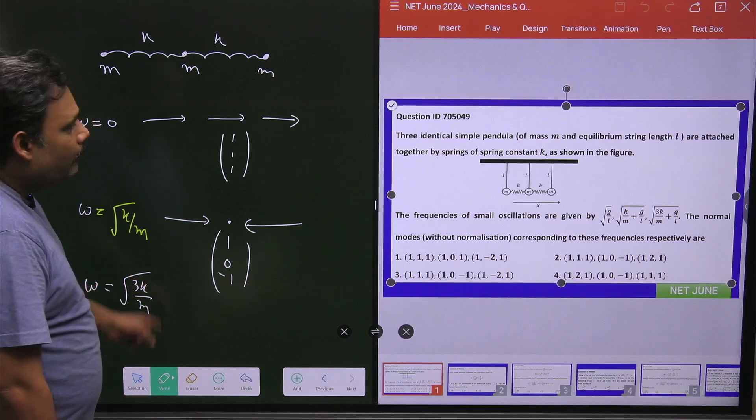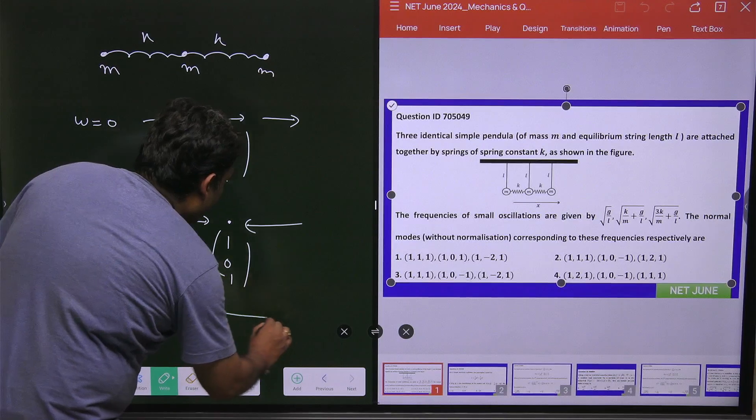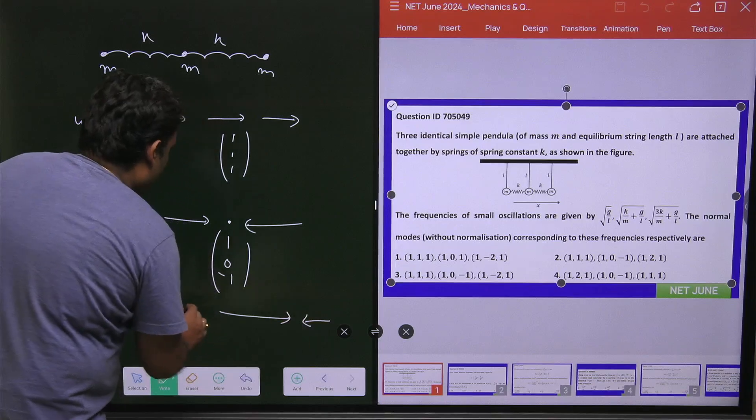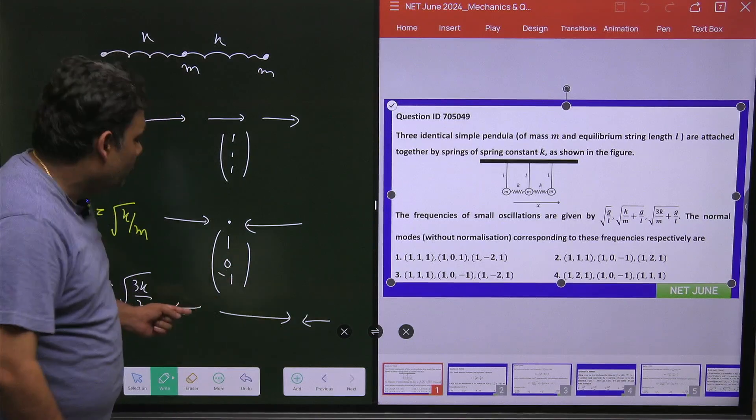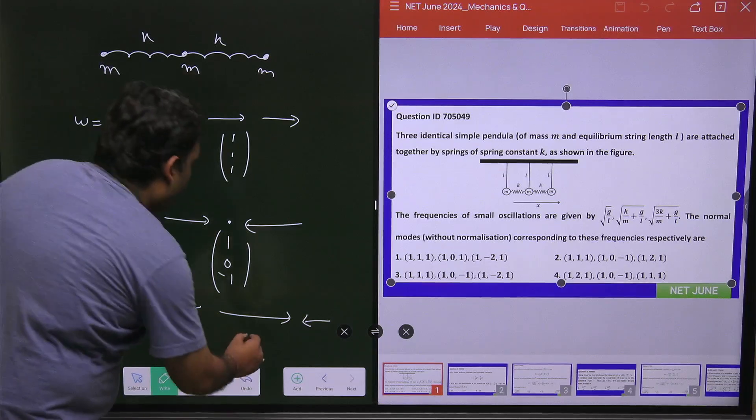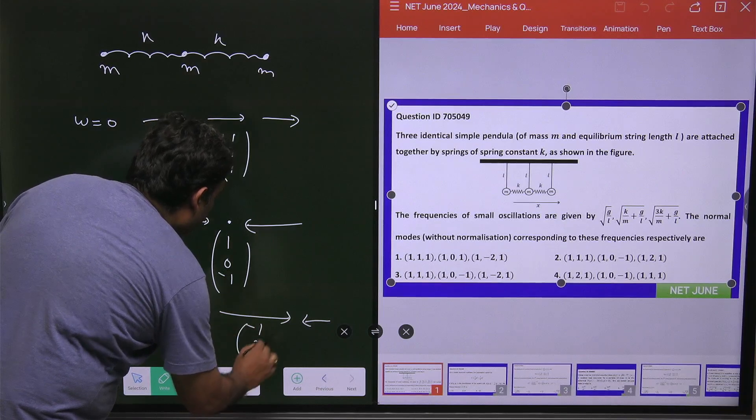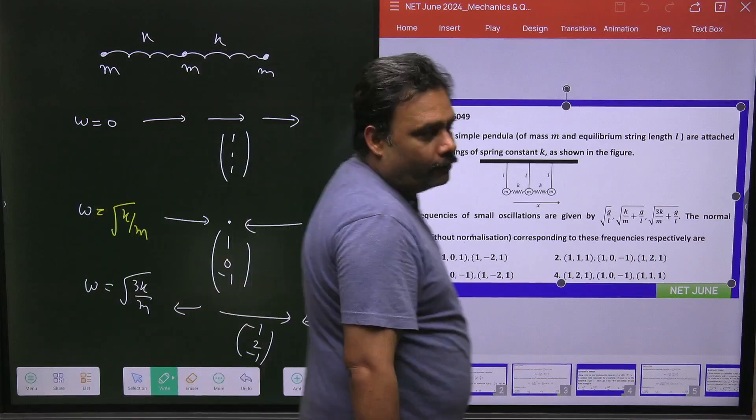And for omega equals root under 3K upon M, what will happen? The second mass will move with twice of the first one, but these two will move in the same direction. The end masses will move in the same direction, but the second will move in the opposite direction. So you can go for 1, minus 2, 1, or you can go for 1, 2, minus 1. That is also the same thing.